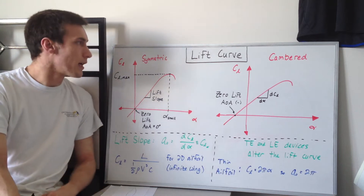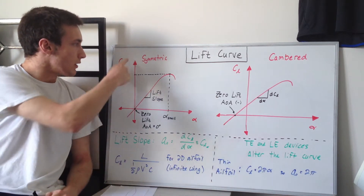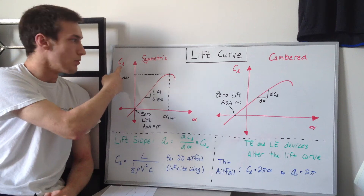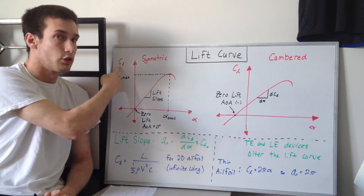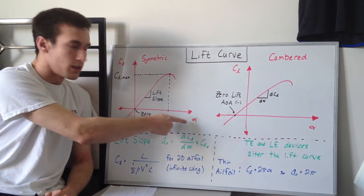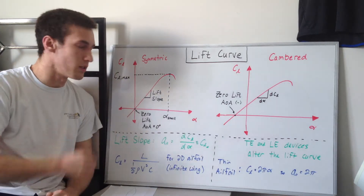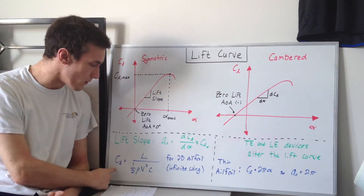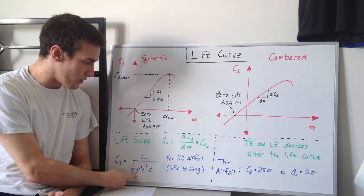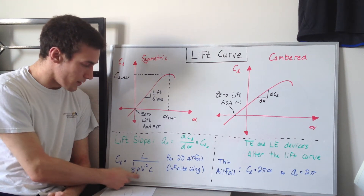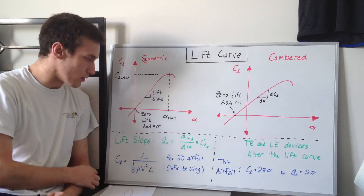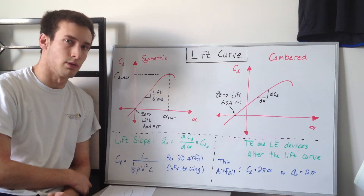The first thing to do is take a look at the axes of the plot. The y-axis has the term C sub L, or CL, and the x-axis has alpha, or angle of attack. CL is the lift coefficient, which is the lift over one half times the density times the velocity squared — the dynamic pressure — times the chord length. This is for a 2D airfoil.